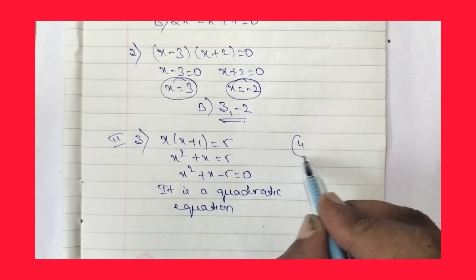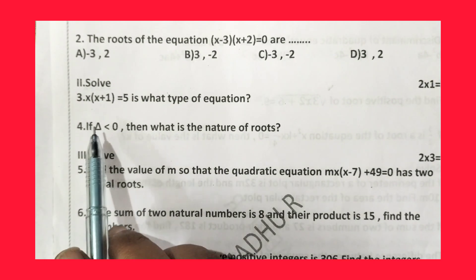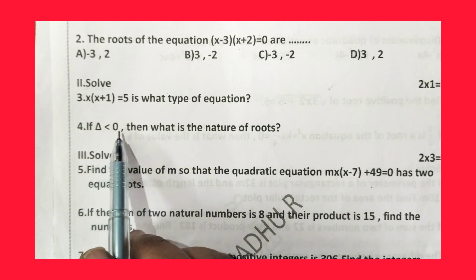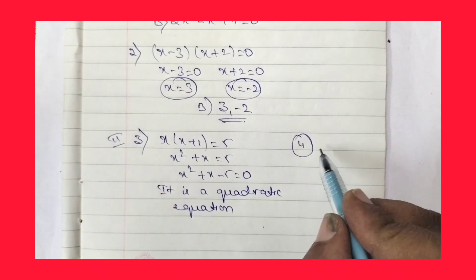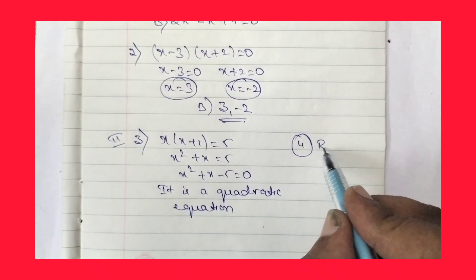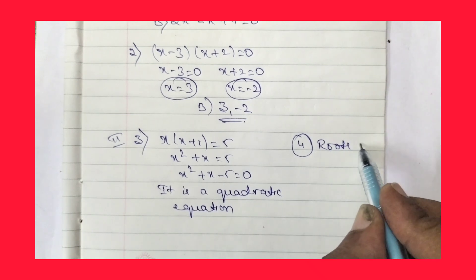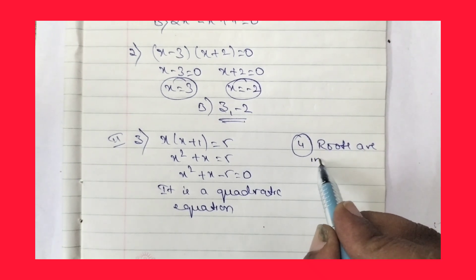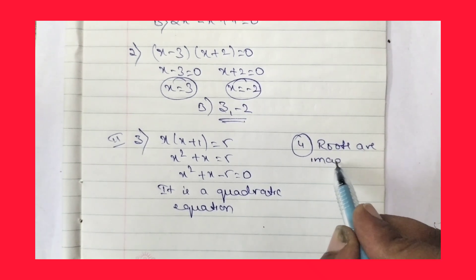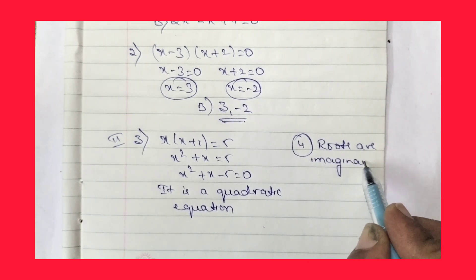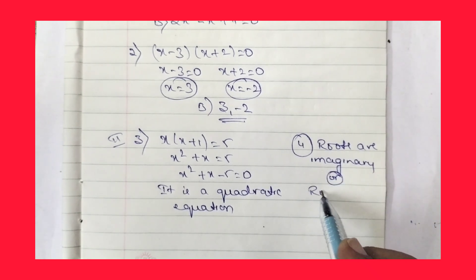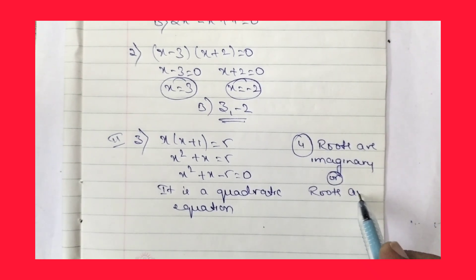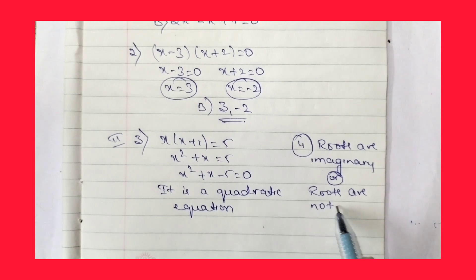Now let us move for question number 4. If delta is less than 0, then what is the nature of roots? If delta is less than 0, the roots are imaginary. Roots are not real.